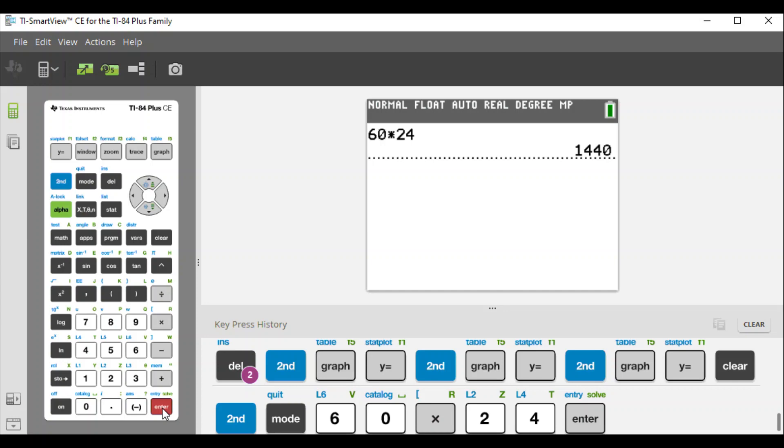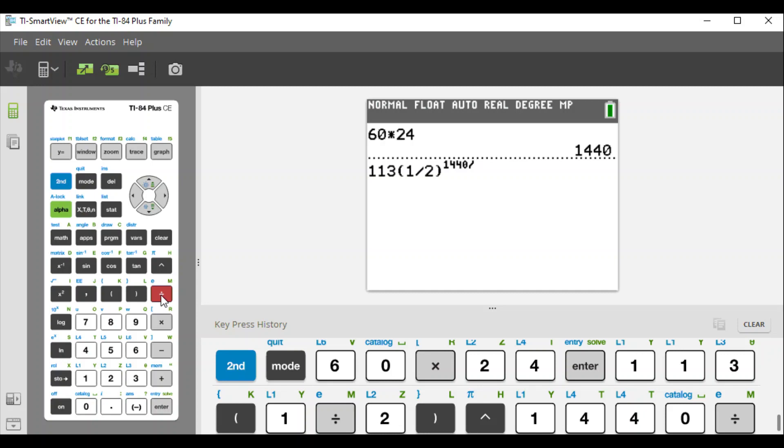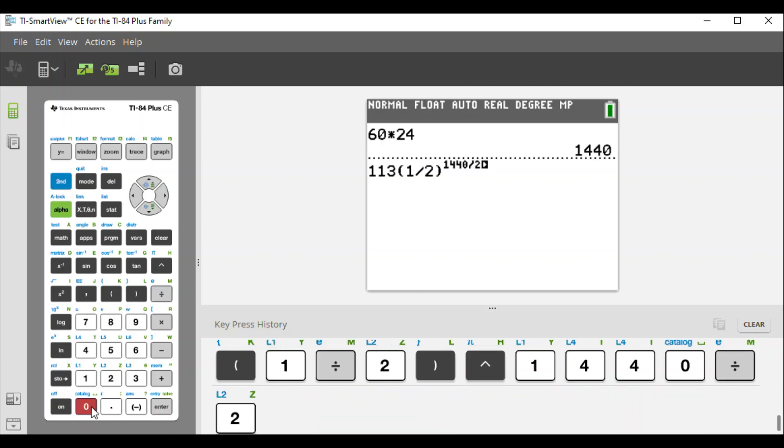Times 24, so our number of minutes will be 1440. Our function will be 113 times 1/2 raised to - the m value was 1440 - but we're dividing that by 20, and then we're going to add 72 to this.